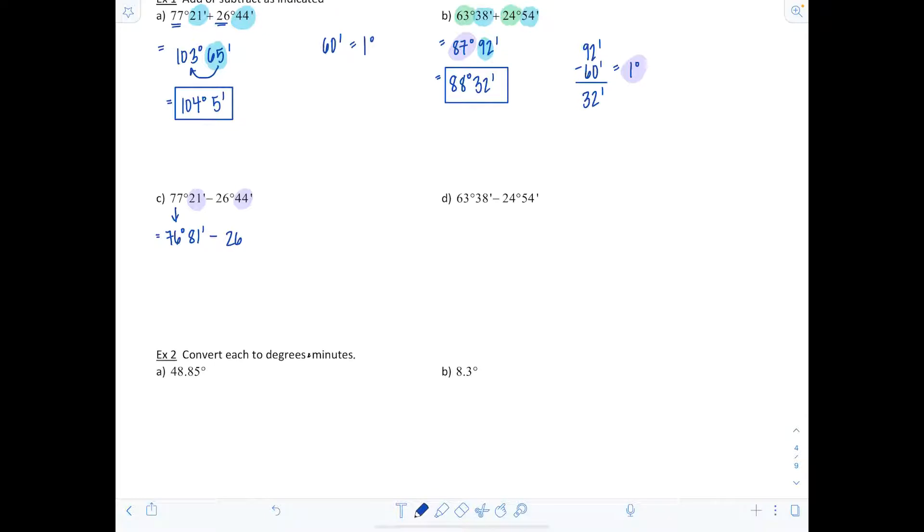The 21 minutes I'm gonna add 60 to, making it 81 minutes. Then I subtract 26 degrees and 44 minutes. Just like when you borrow with regular subtraction, since we're working in a base 60 numbering system, when you borrow you borrow 60. So 76 minus 26 is 50 degrees, and 81 minutes minus 44 minutes is 37 minutes.